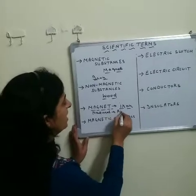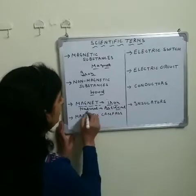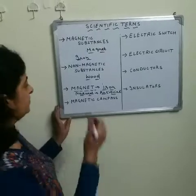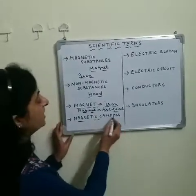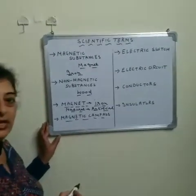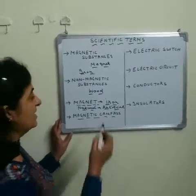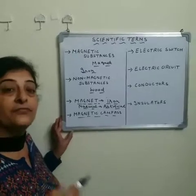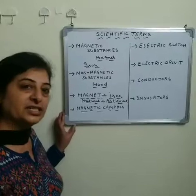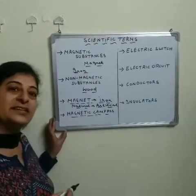A magnet is of two types: natural magnet as well as artificial magnet. The word magnet is taken from the word magnetite. Magnetite is an ore of magnet. The next term is magnetic compass — a device used to find direction, based on the property that a freely suspended magnet always aligns in the north and south direction.